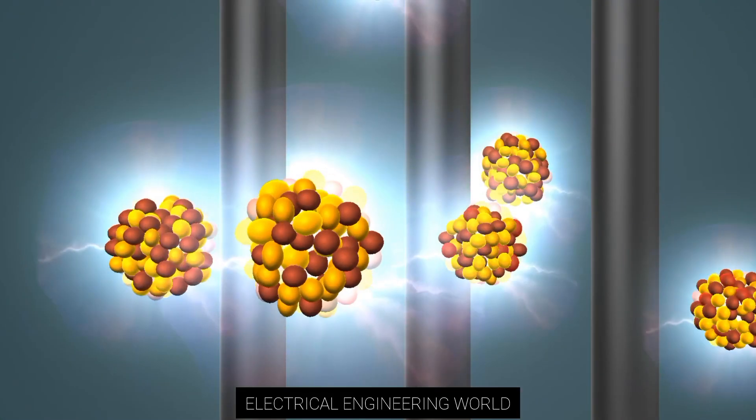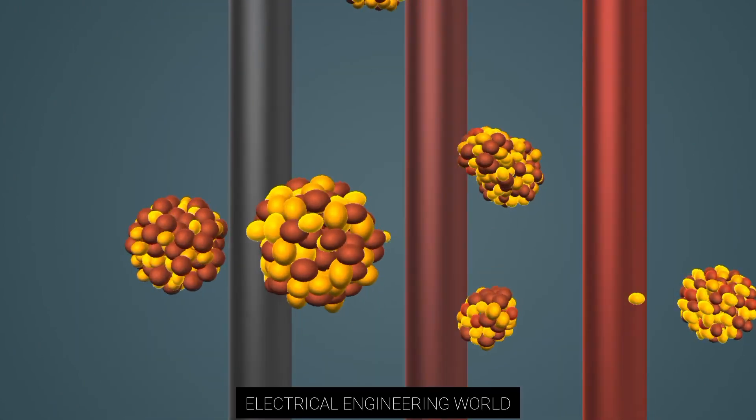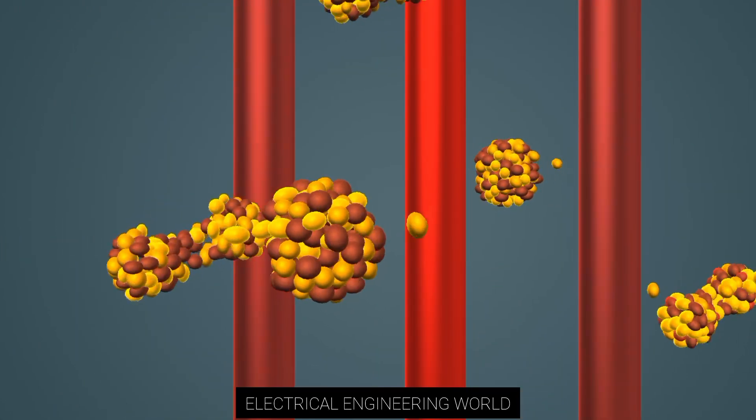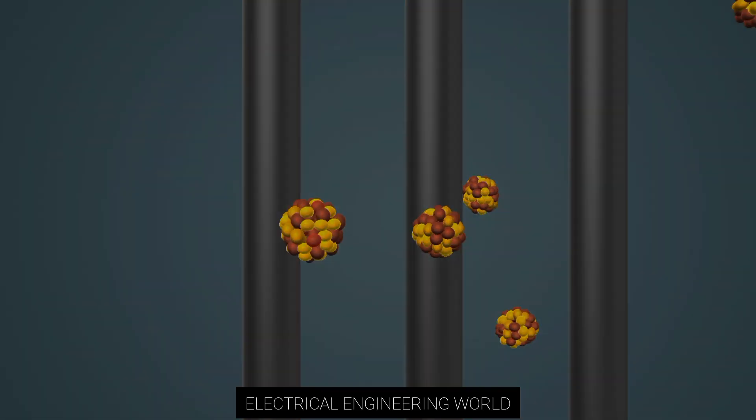The reaction is controlled since the control rods absorb a certain quantity of neutrons. Without this, the reaction would be uncontrolled, like the process of a nuclear bomb exploding.